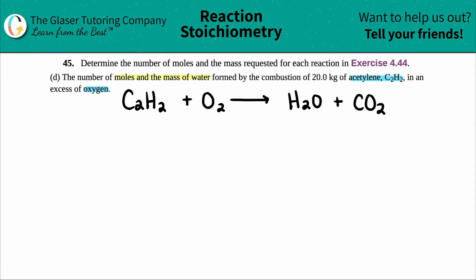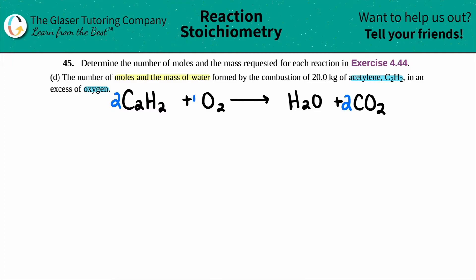Now we need to balance the equation. I have two carbons on the left but only one on the right, so I put a 2 in front of CO₂. The hydrogens look good — two on each side. For the oxygens I have a total of four plus one = five, so I put 5/2 in front of O₂, then multiply everything by two. The balanced equation is: 2C₂H₂ + 5O₂ → 4CO₂ + 2H₂O.